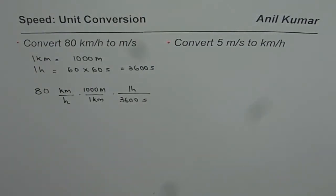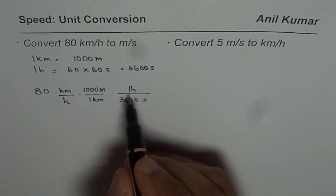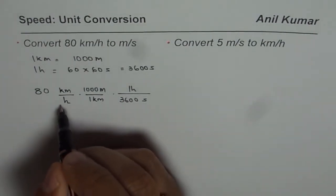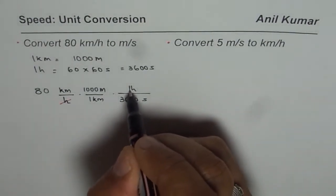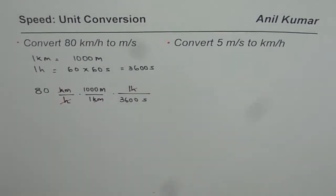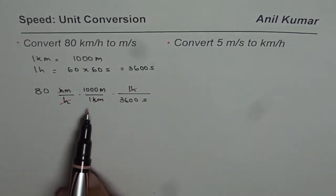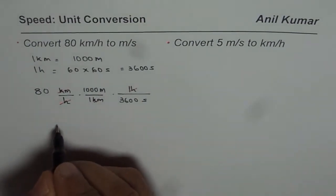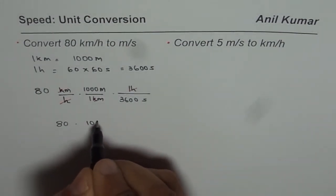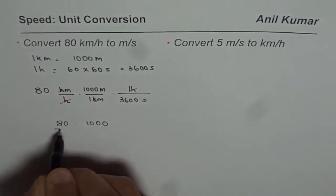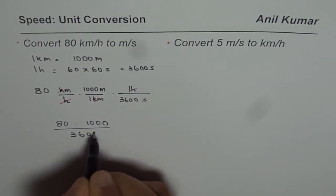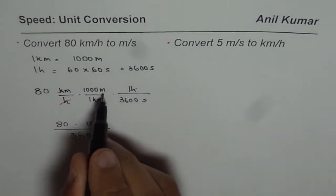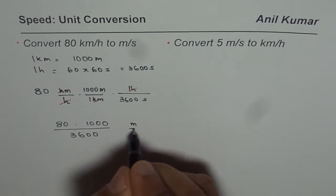Now 1 hour and 3600 seconds is also the same units, so you don't really change the numbers. You're multiplying by 1. Now 1 hour and 1 hour cancel, kilometer and kilometers also cancel. So you're left with meters on top, seconds there.